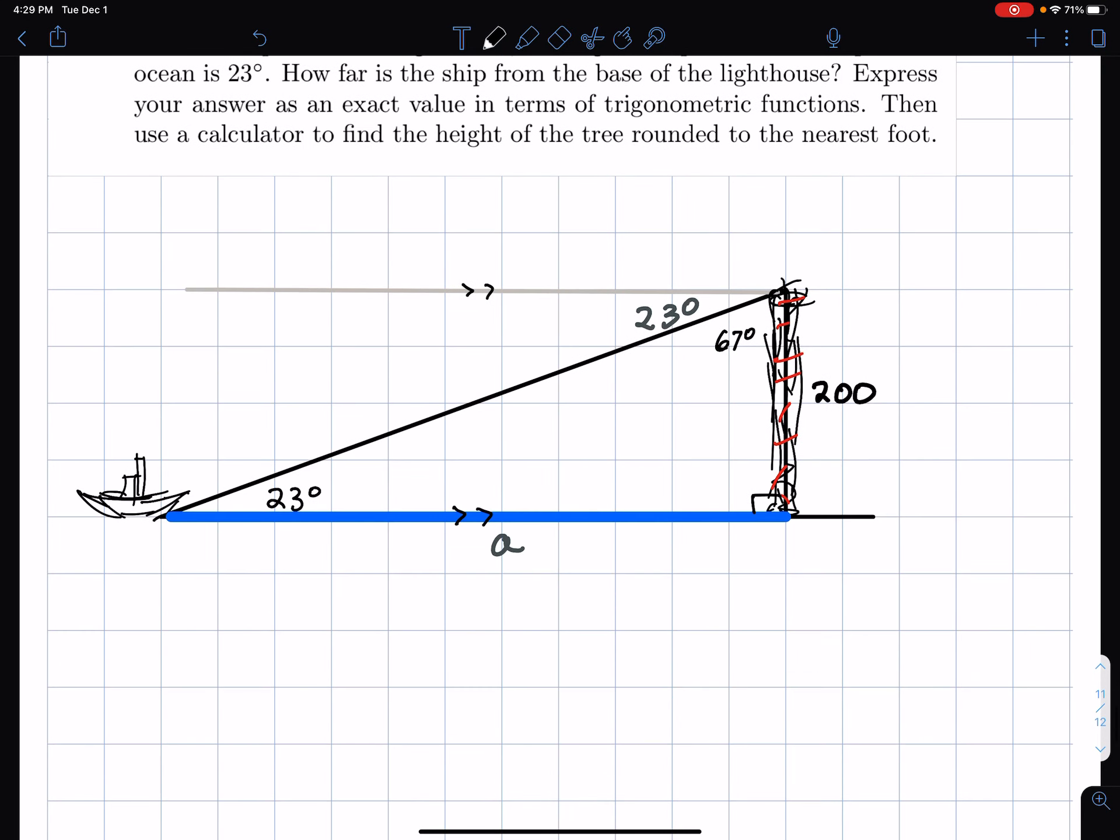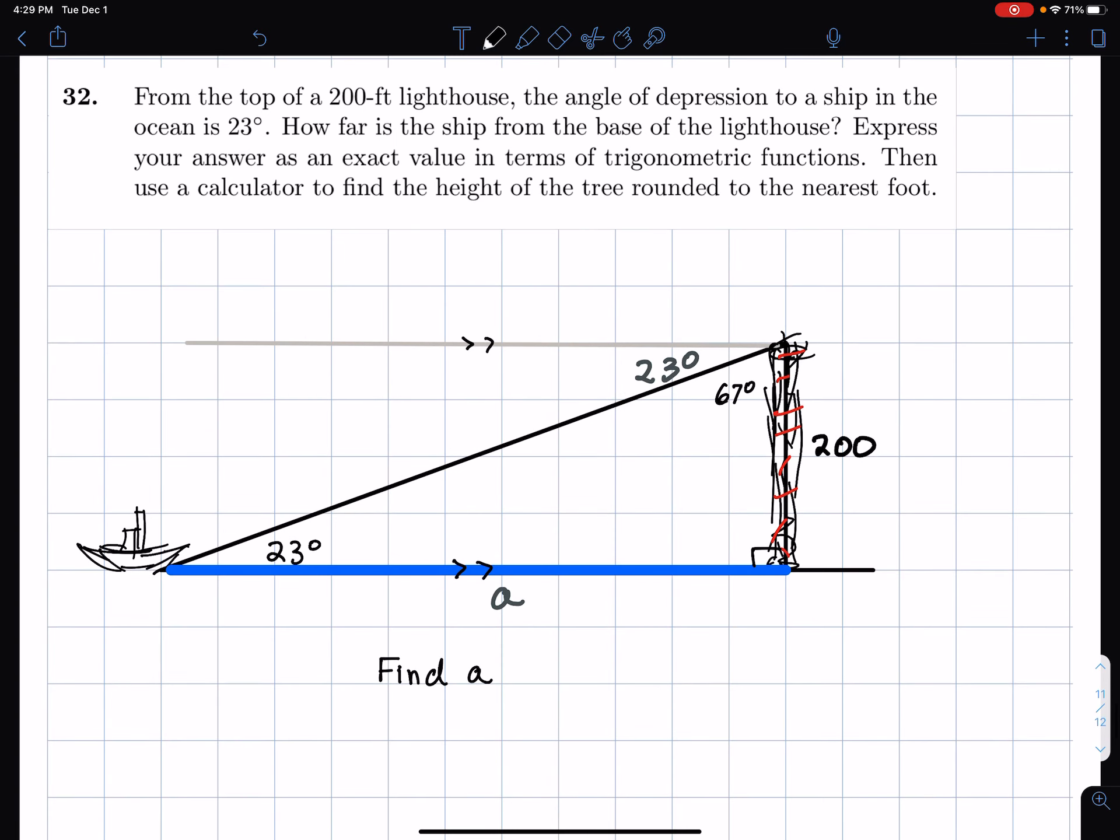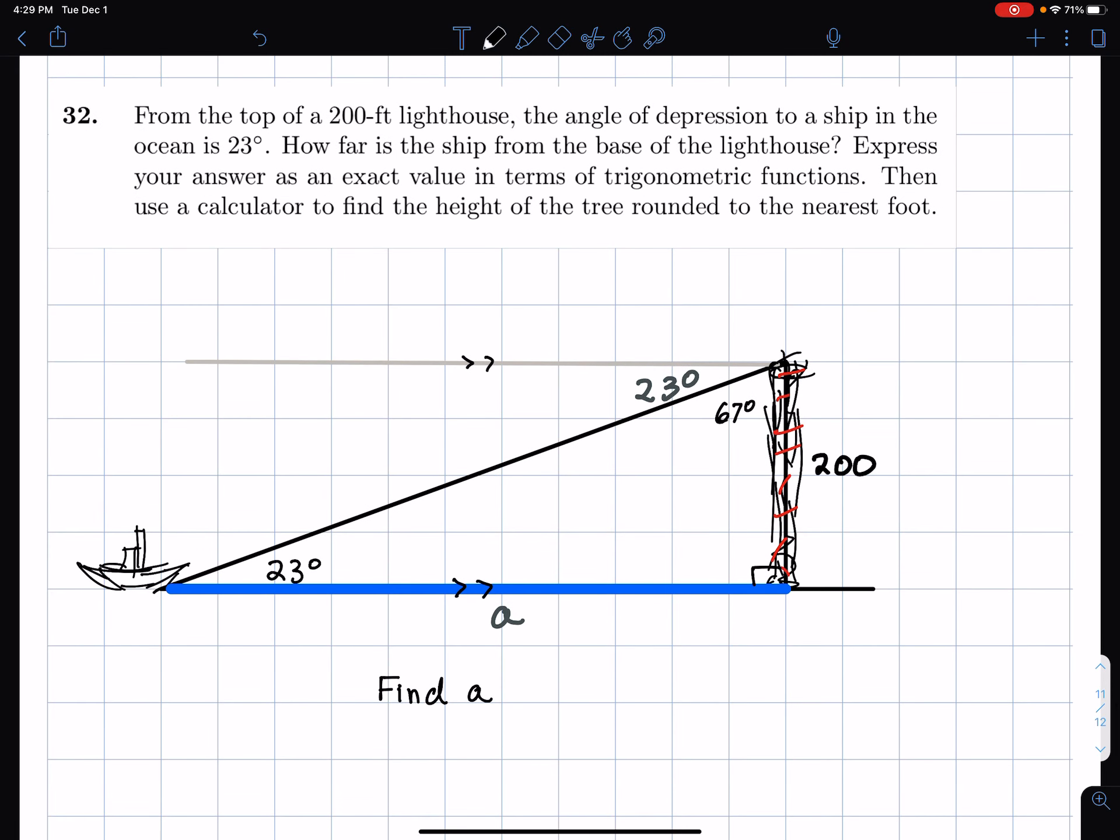But we don't really need that 67 degrees right now. We're trying to find A, aren't we? We're trying to find how far is the ship? I used a calculator to find the height of the tree. That's leftover from the last problem. I used a calculator to round to the nearest foot. Sorry about that, everyone. That was the last problem. I had a tree. I think I was copying and pasting.